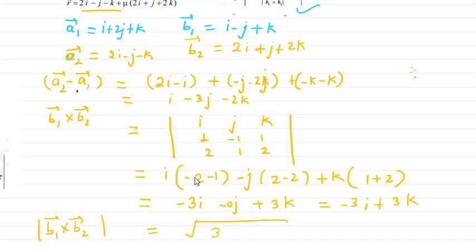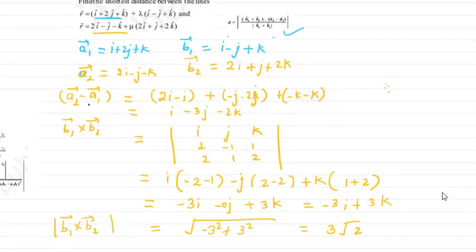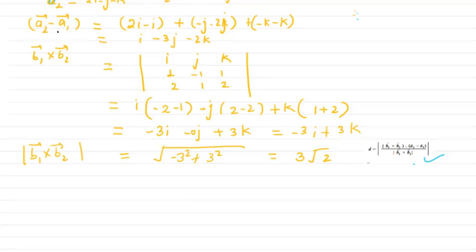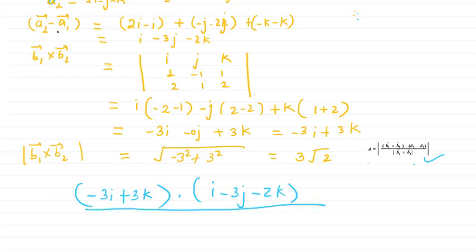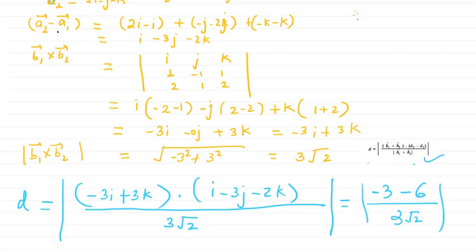The magnitude of b1 × b2 is √(3² + 0² + 3²) = √18 = 3√2. Now substituting into the formula: d = |(−3i + 3k) · (i − 3j − 2k)| / 3√2. The dot product gives −3 + 0 − 6 = −9, so |−9| / 3√2 = 9 / 3√2 = 3/√2 = 3√2/2 units. That is the shortest distance.